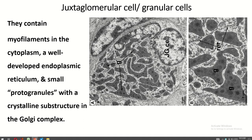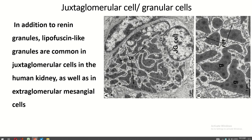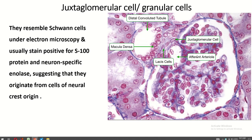They contain myofilaments in the cytoplasm, a well-developed endoplasmic reticulum, and small protogranules with a crystalline substructure in the Golgi complex. The signature feature of the juxtaglomerular cell is the numerous electron-dense membrane-bound granules of varying size and shape, which contain the aspartyl protease renin. In addition, lipofuscin-like granules are common in juxtaglomerular cells in the human kidney, as well as in juxtaglomerular mesangial cells. The juxtaglomerular cell resembles a neural cell under electron microscopy and usually stains positive for S100 protein and neuron-specific enolase, suggesting they originate from cells of neural crest origin.